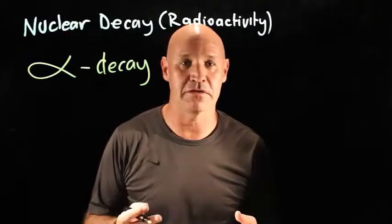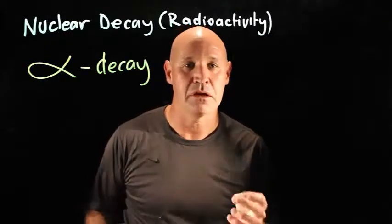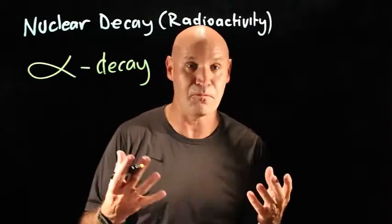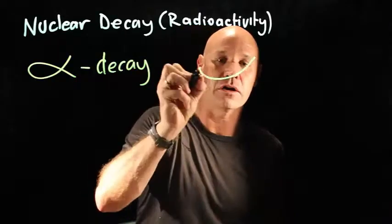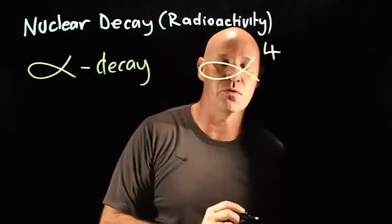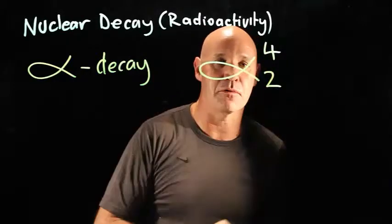It tends to be the heavy elements that undergo alpha decay because the alpha particle is fairly heavy. It's got a mass of four and an atomic number of two.